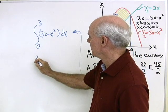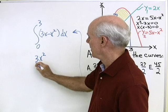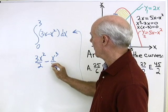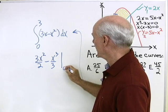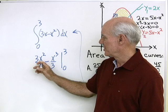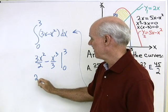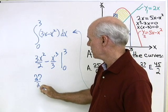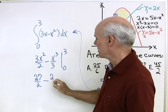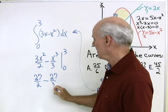What am I going to get when I integrate? 3x squared over 2 minus x cubed over 3, all evaluated between 0 and 3. Plug in 3: 3 squared is 9 times 3 is 27 over 2 minus 3 to the third power, 27 over 3.